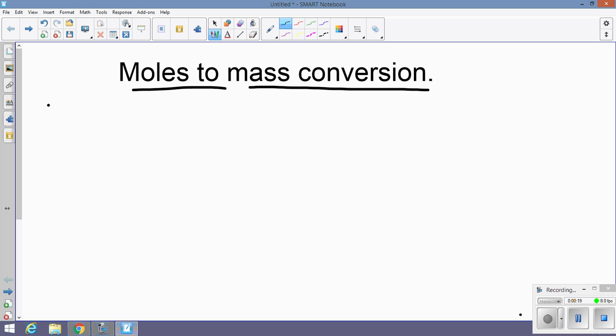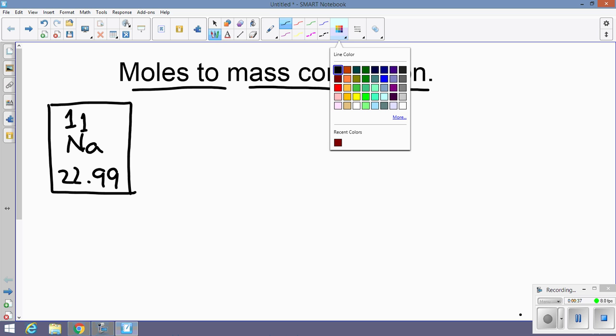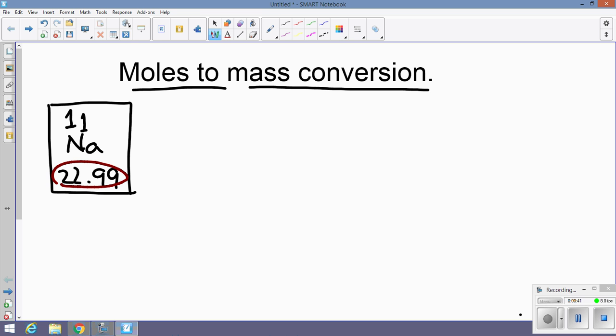Remember the chart we had last time with different atoms. In this case, let's do sodium. Sodium has a mass of 22.99, which is what's important to us, and 11 protons. But what's important to us right now is the mass of sodium, 22.99.